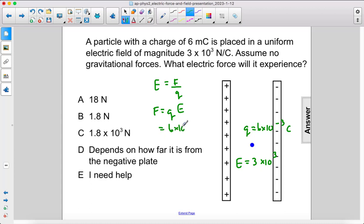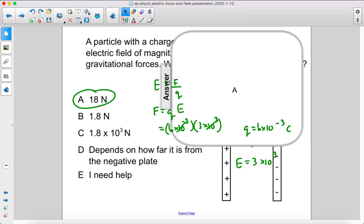So we have 6 times 10 to the negative 3, 3 times 10 to the 3, so the 10 to the negative 3 and the 10 to the 3 will cancel out, leaving us with 18 newtons A.